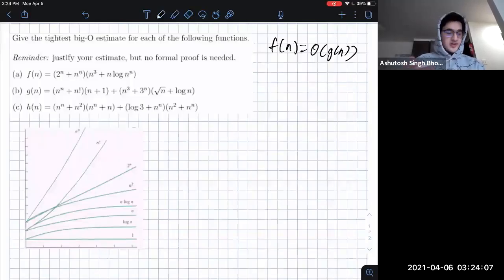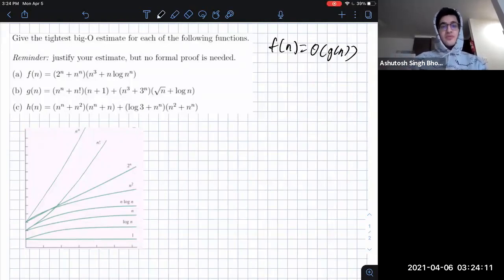So real quick, big O example for you all. Give the tightest big O estimate of each of the following functions. Justify your estimate, but no formal proof is needed.